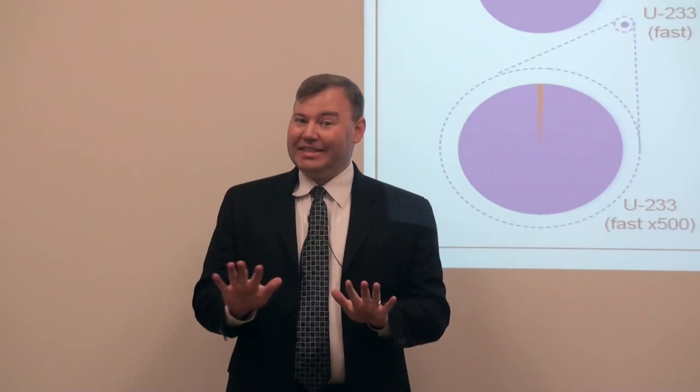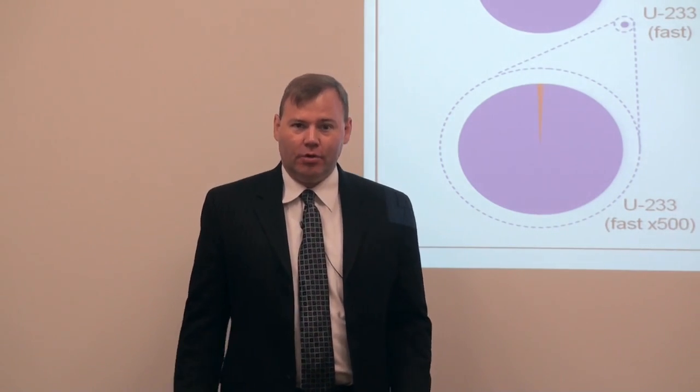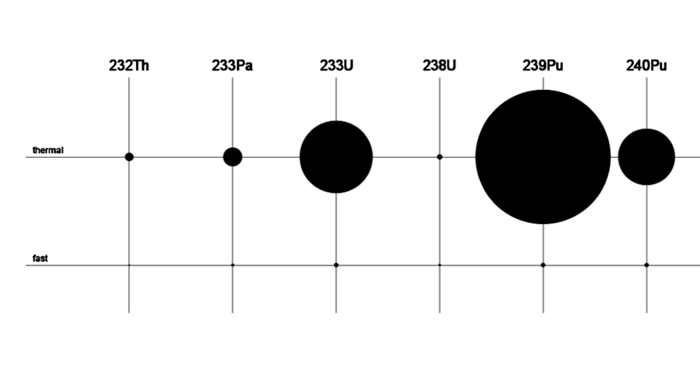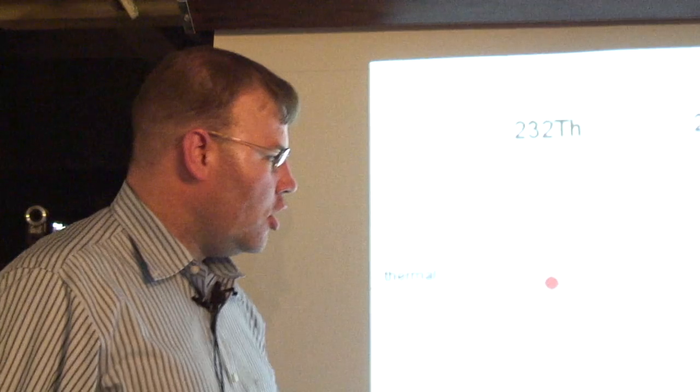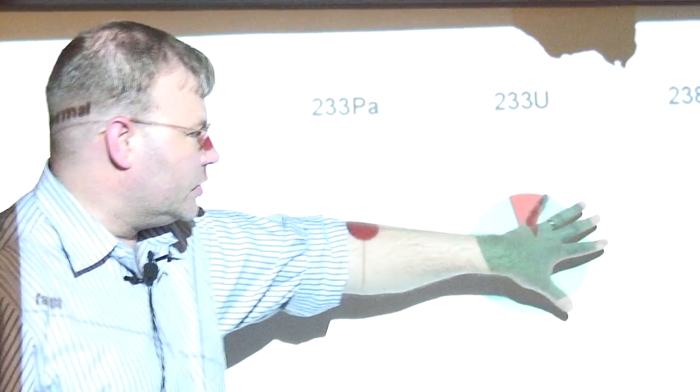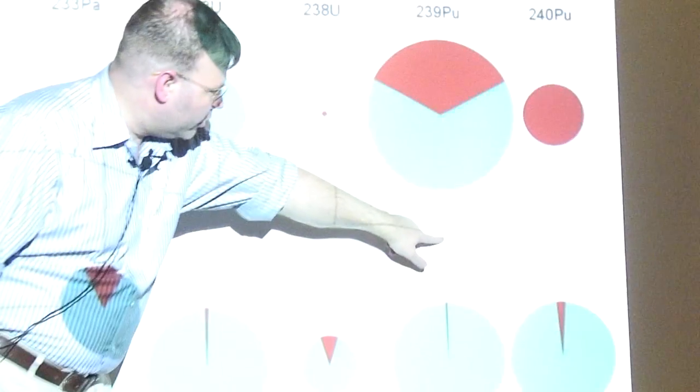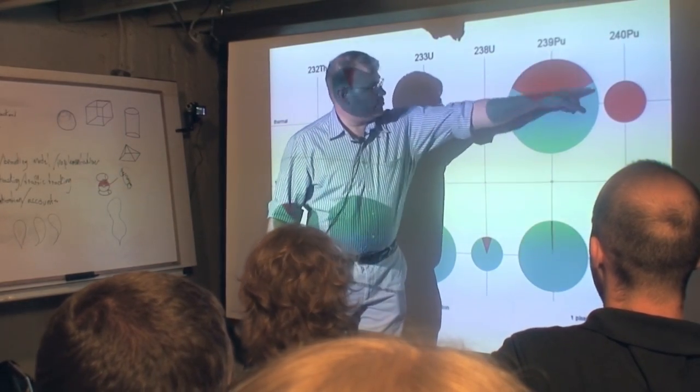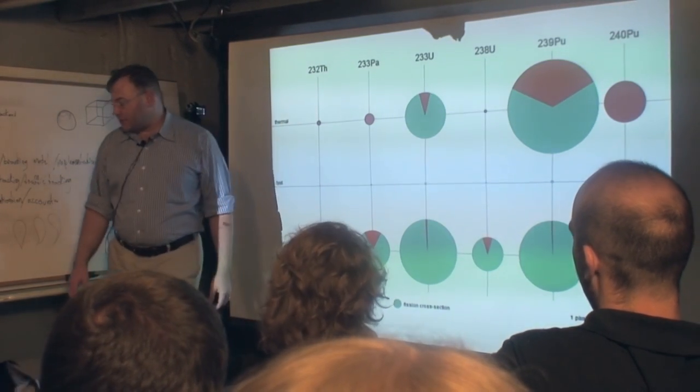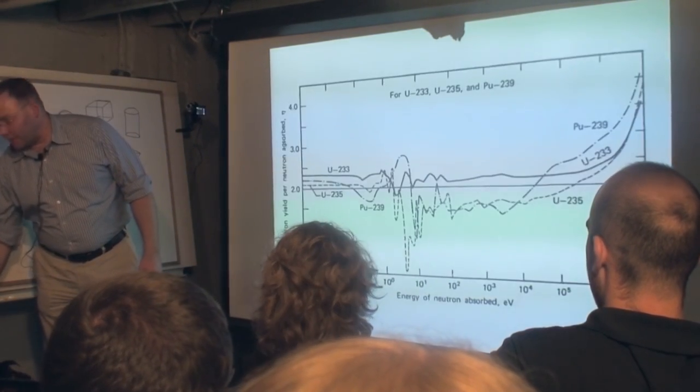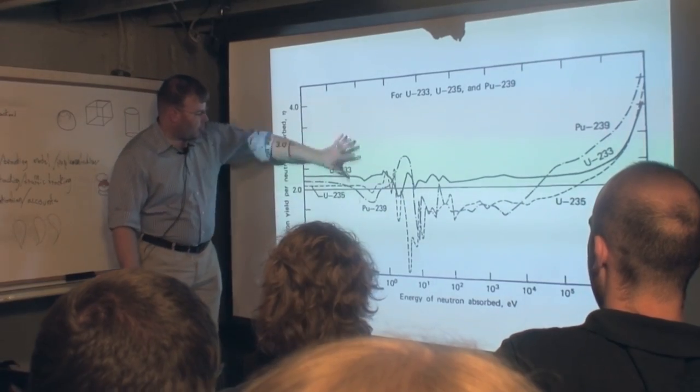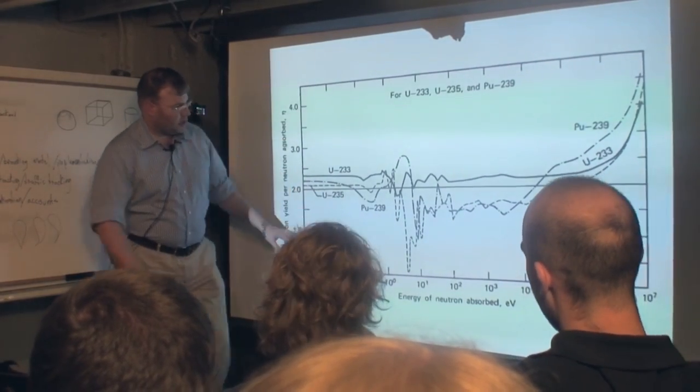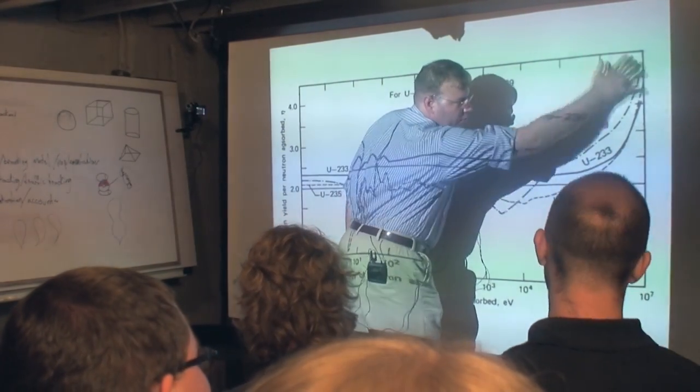Well, there's a powerful disincentive to doing it this way, and it has to do with what are called cross-sections. These are a way of describing how likely it is that a nuclear reaction will proceed. Look how much bigger the cross-sections are in thermal than they are in fast. How many of these little dots are we going to need to add up to this size? We're going to need a lot. So this is why it was a big deal to be able to have performance in this region of the curve.